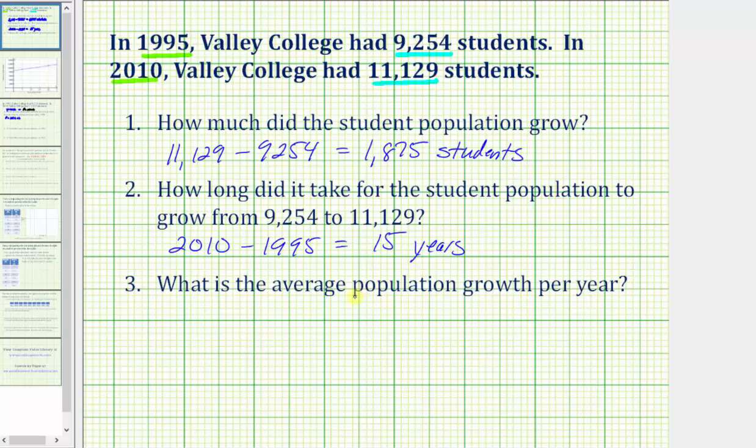Step three asks us to find the average population growth per year. To find the average growth, we need to take the change in the population, sometimes represented using this symbol delta, and divide by the change in time. We have this information from number one and number two. The change in the student population was a growth of 1,875 students, and the change in time is 15 years. 1,875 divided by 15 equals 125, which means the average population growth per year is 125 students per year.